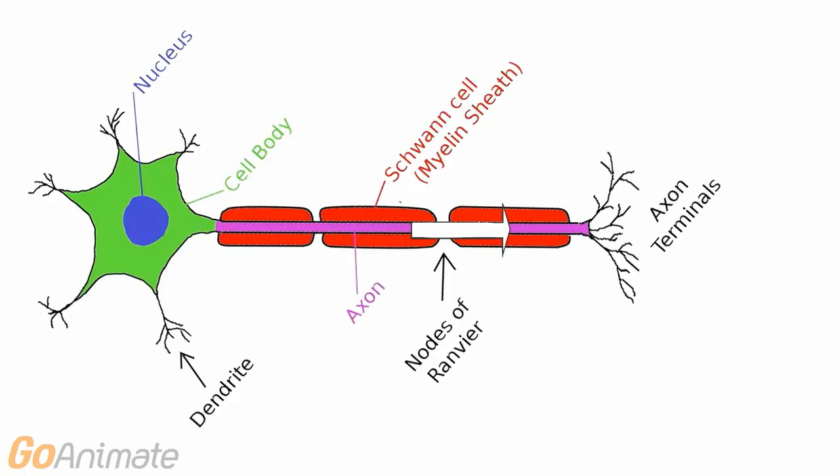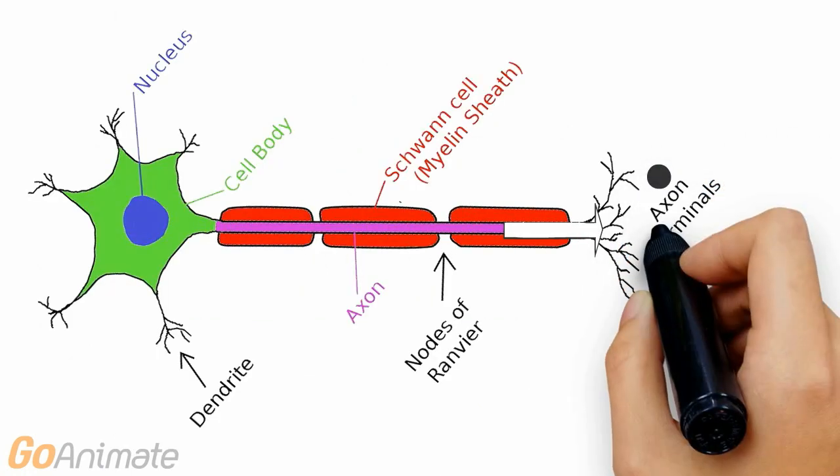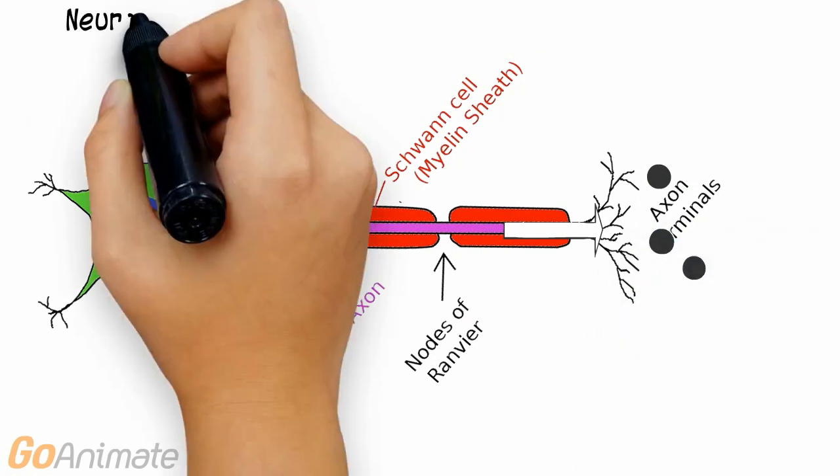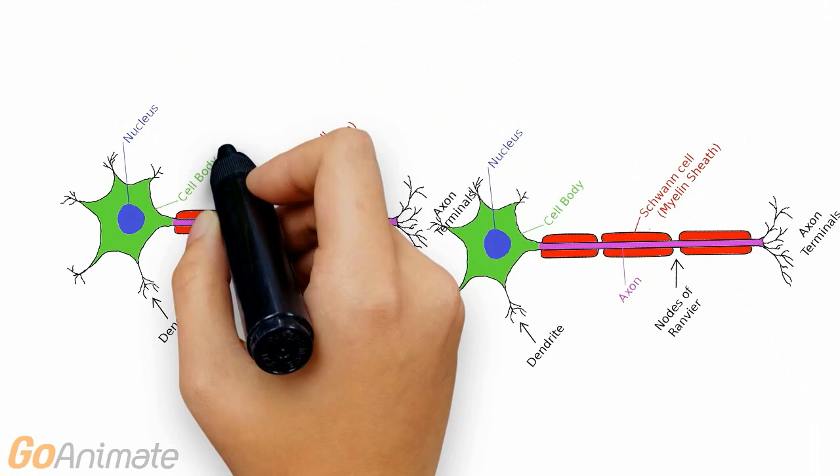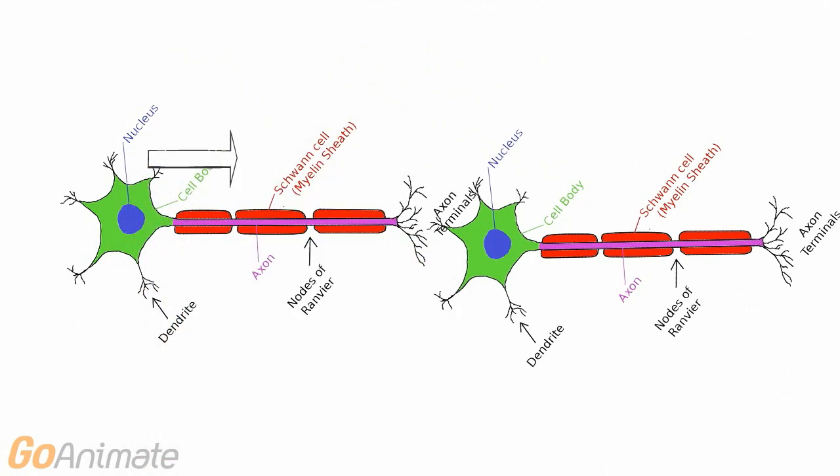Action potentials travel or propagate down the axon of a neuron until reaching the axon terminal. The axon terminal responds to the action potential by releasing a neurotransmitter. Action potentials allow neurons to transfer information throughout the nervous system.